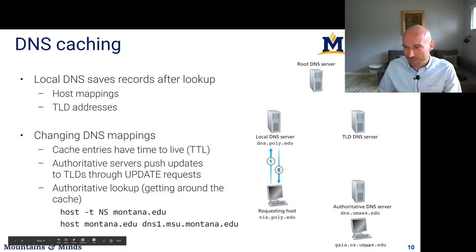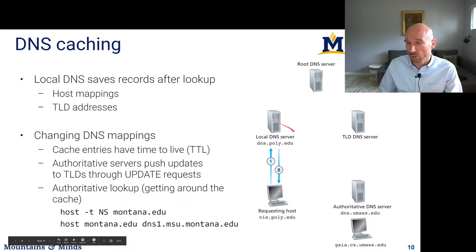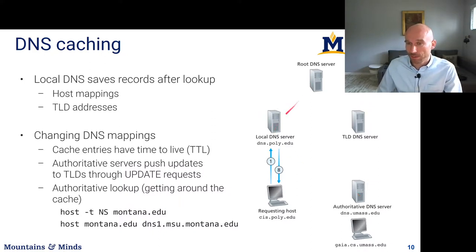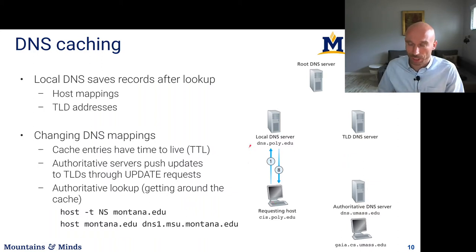If gaia.cs.umass.edu is a new web address being looked up from our organization, our local DNS might already have the IP address for the .edu TLD cached, so it doesn't need to contact the root server. Or maybe there's already been traffic to umass.edu and so our local DNS also has the IP of the authoritative DNS server cached. As lookups come in, the local DNS will try to cache TLD and authoritative DNS server entries to avoid steps in the lookup, and hopefully cache even specific IP addresses to speed up lookups for local hosts.